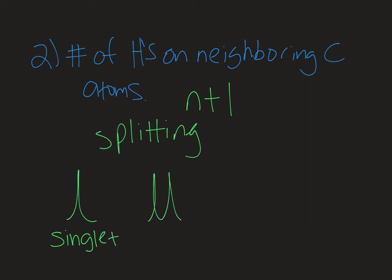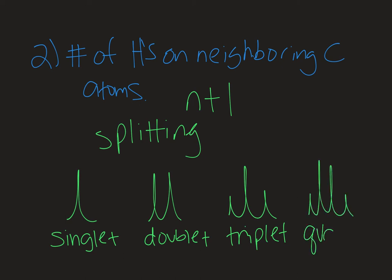When there's two neighbors, then you might get a peak that's split in two and that's called the doublet. N is equal to the number of protons on the neighboring carbon. So if there's one neighbor, 1 plus 1 is 2, I get a doublet. If I had two neighbors, I'd get a triplet. And I could have three neighbors and that would give me a quartet. So the multiplicity of the signal tells me a lot about the structure of the molecule.